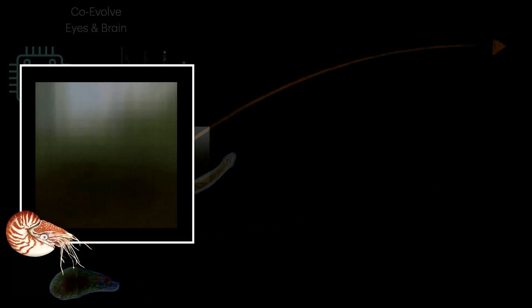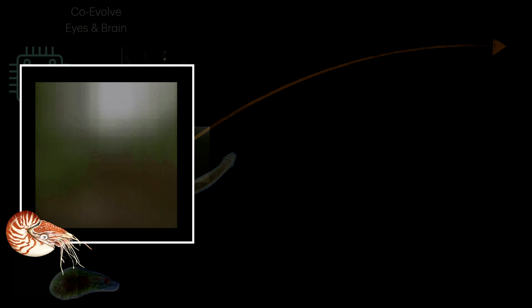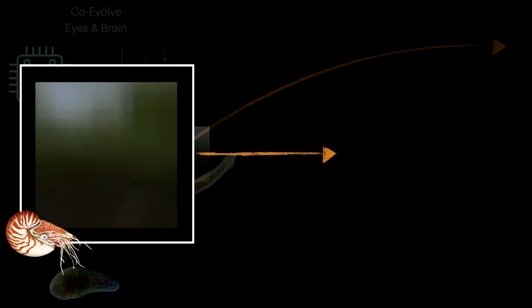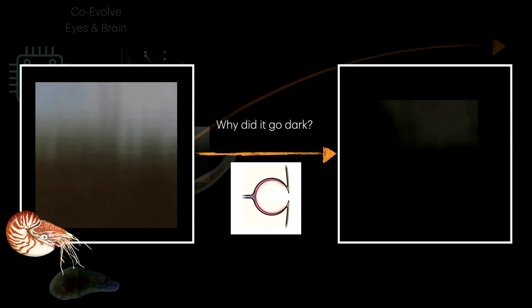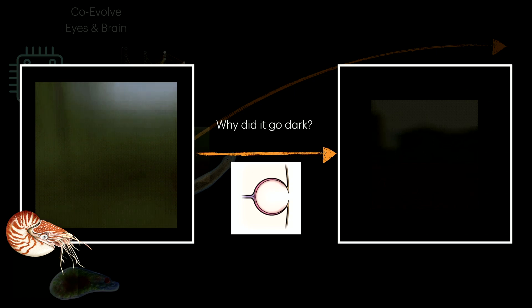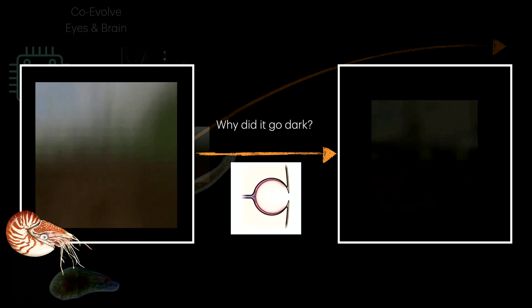But something interesting happens when you run our evolution further. Some of these agents end up getting an evolutionary defect, which is why they start to see the environment in a very dark way. It doesn't really see the environment. Why is that?